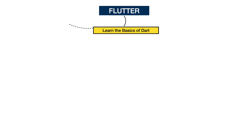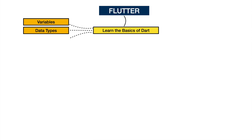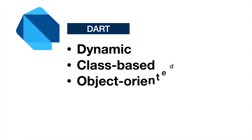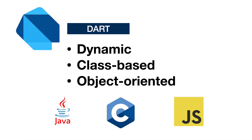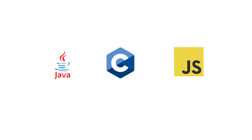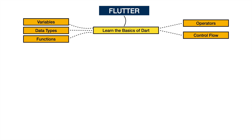Next, learn the basics of the Dart language — start from variables, data types, functions, operators, and control flow statements. Dart is a dynamic, class-based, object-oriented programming language with closures and lexical scope. Syntactically, it is quite similar to Java, C, and JavaScript. You don't need specific prior knowledge to learn Dart; even absolute beginners can pick it up, and if you already know any of those languages, you can learn it easily.